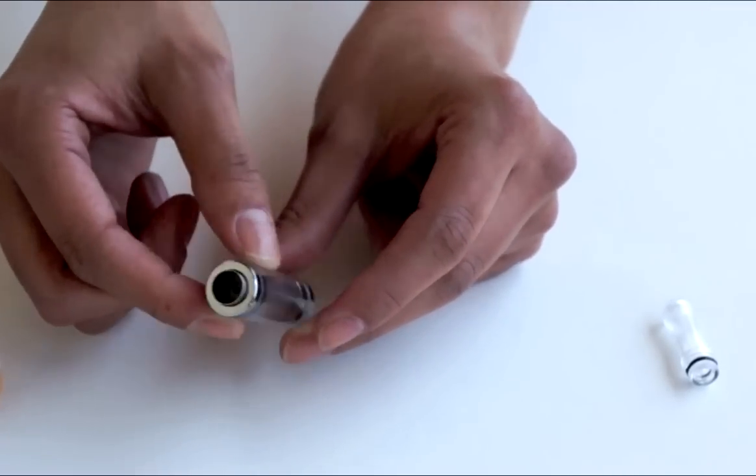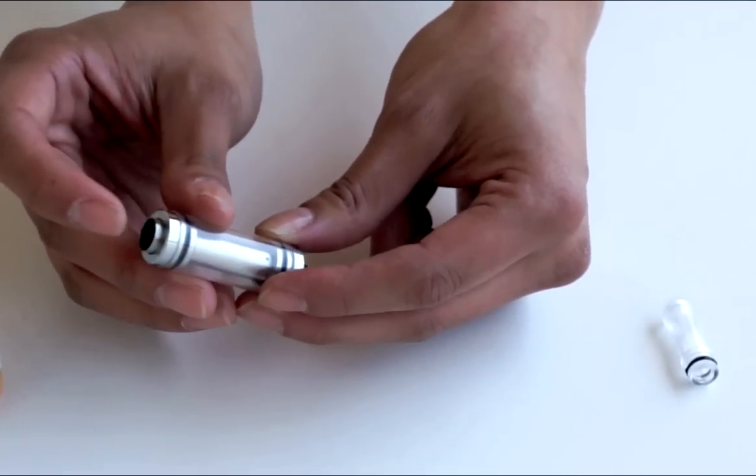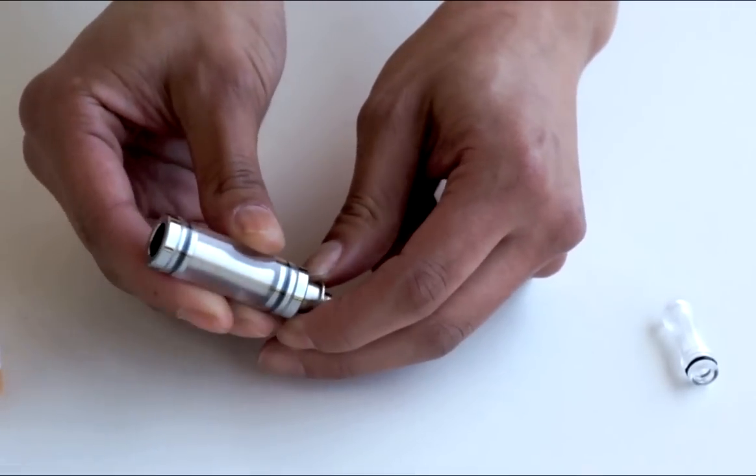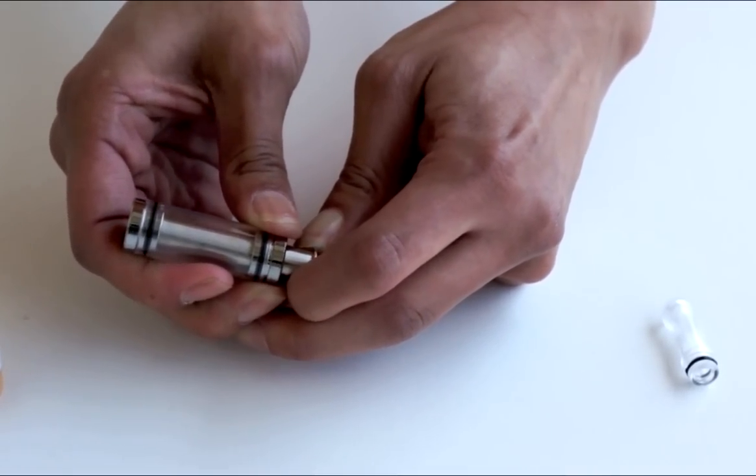pull down the center cartridge, which is contained inside the tank, while holding on to both ends of the tank so it doesn't come apart.